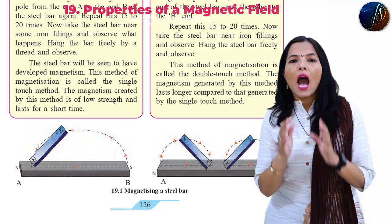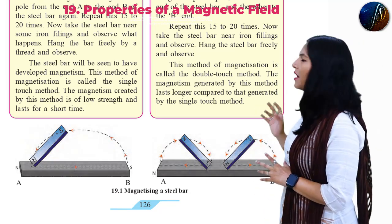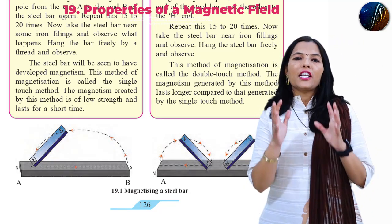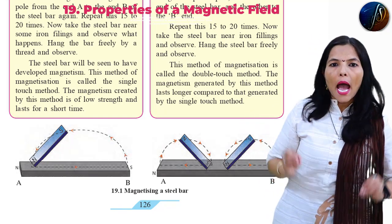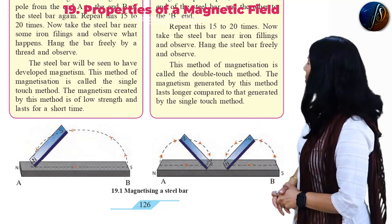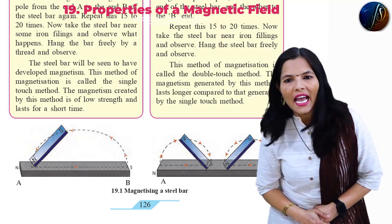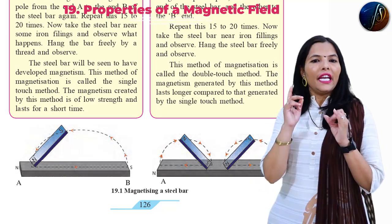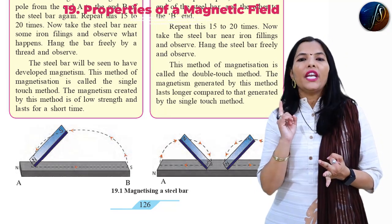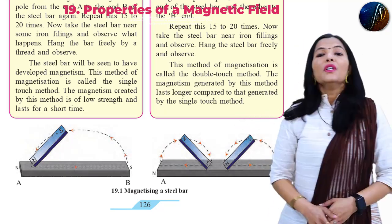So how can we magnetize a steel bar is given in your textbook. For this experiment, we require some apparatus: we need a steel bar, a bar magnet, iron filings, thread, etc.